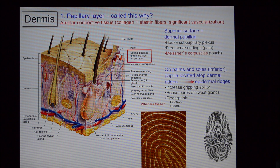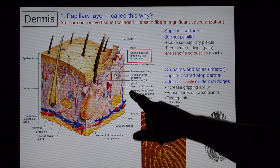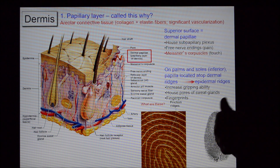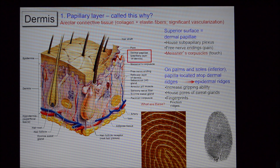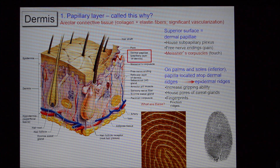The papillary layer is also important because on the hands it gives rise to what we call friction ridges — what you probably know as fingerprints. Dermal papillae line up to create these ridges, and they're not there for police identification — they're there so you have friction on your fingertips to pick things up and hold on to them. You can also see tiny openings throughout the papillary layer which are openings of sweat glands — yes, there are sweat glands even on the palms of your hands, as you know if you've ever had nervous sweaty palms.